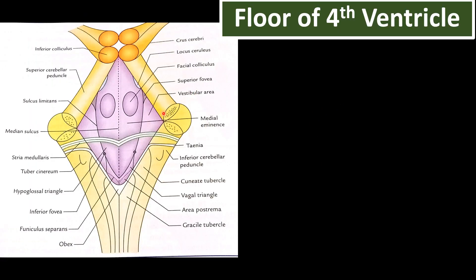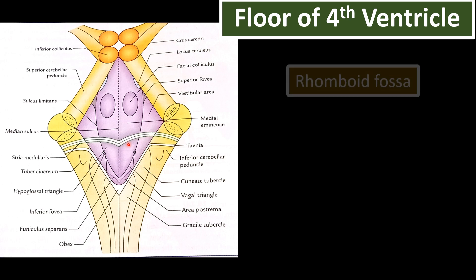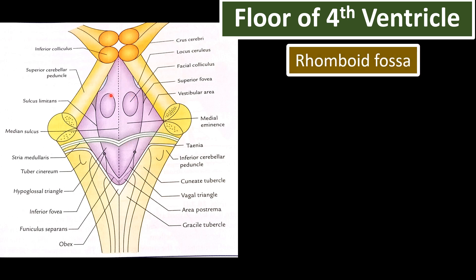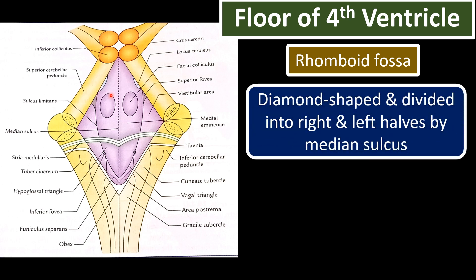The floor of the fourth ventricle is a very important topic — first-year medicine students may get a five-mark question on it in their examinations. It is the rhomboid fossa. The floor consists of right and left halves separated by the median sulcus. The stria medullaris divides the floor into two areas: the upper pontine part — contributed by the posterior surface of the pons — and the lower medullary part — contributed by the posterior surface of the medulla oblongata.